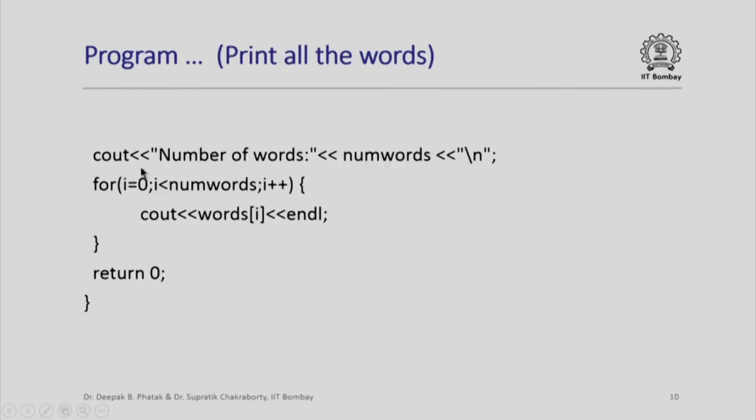All that I need to do is, I output the number of words which is given by the variable numbers and for each of those words, I simply output words i. Notice that words is that two dimensional array, but C++ understands if I just put words i, that means the i-th row, since i-th row represents a valid string, C++ permits me to use this as if it was a one dimensional array with the name words. This will output the i-th word, i varies from 0 to numbers, I would have got all my words printed.